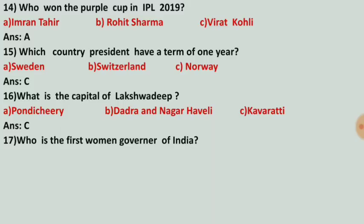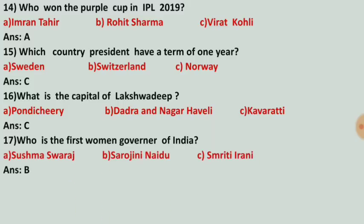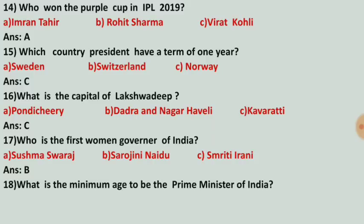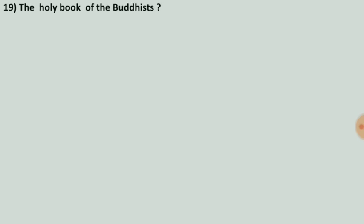Who is the first woman governor of India? Options are Sushma Swaraj, Sarojini Naidu, and Smriti Irani. The correct answer is number B, Sarojini Naidu. What is the minimum age to become the Prime Minister of India? Options are 25, 26, and 27. The correct answer is 25 years.